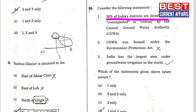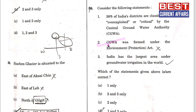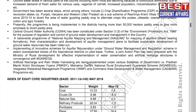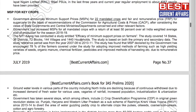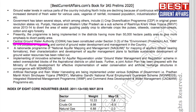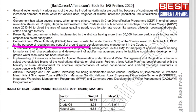Consider the following statements. Statement two is correct. From our July 2019 current affairs book, page 38: it is clearly mentioned that the Central Groundwater Authority (CGWA) has been constituted under Section 3 of the Environment Protection Act 1986 for the purpose of regulation and control of groundwater development and management in the country.